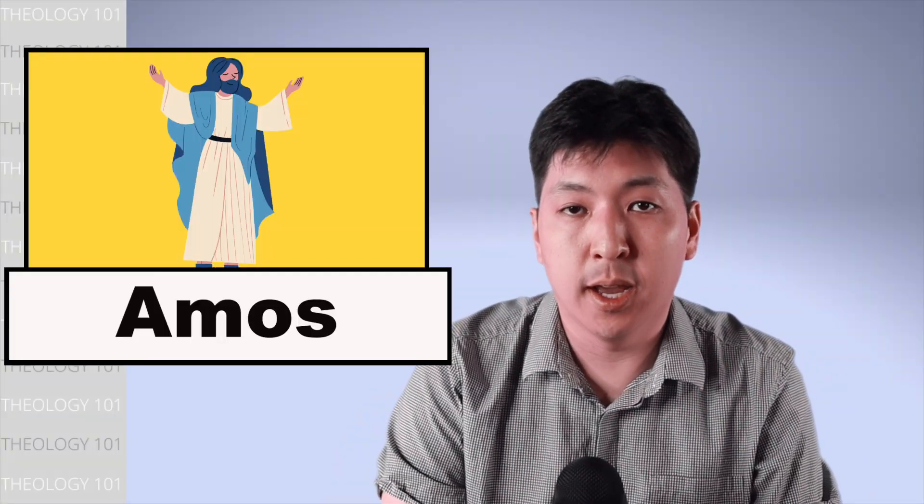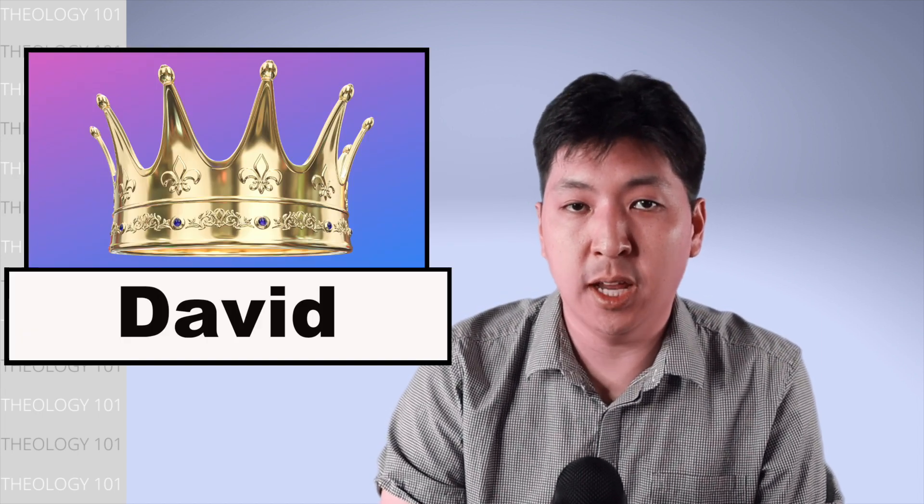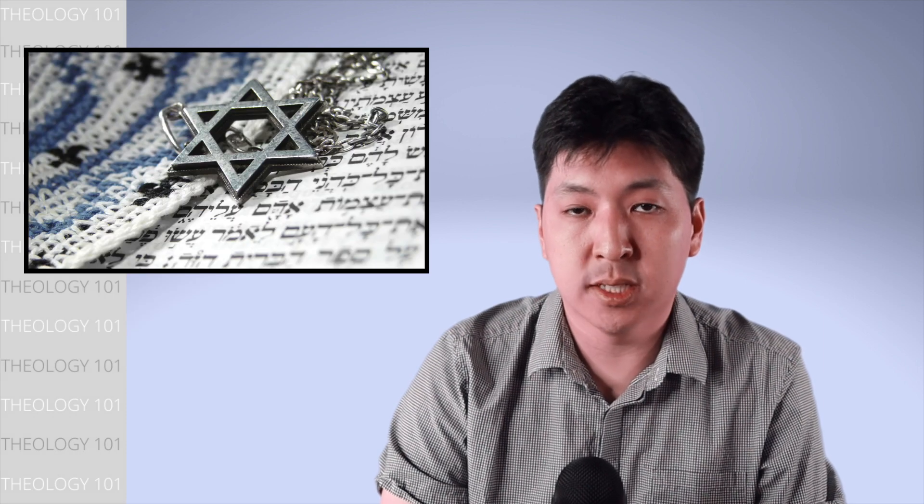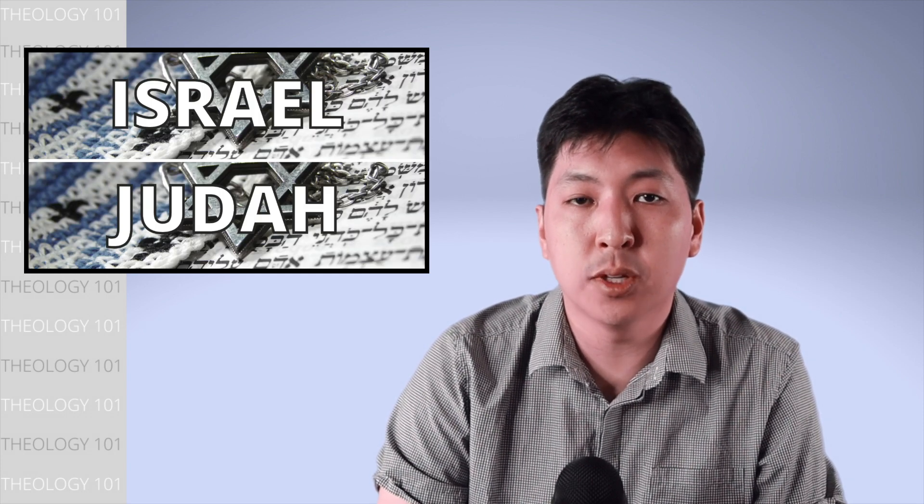Let me give you the historical background of Amos. During Amos' time, this was called the Silver Age in Israel's history. The Golden Age referred to the time of King David and Solomon, where Israel was established as one nation. After Solomon, Israel experienced a lot of wars, hardships, and trials. This led to Israel splitting into two kingdoms, Israel in the north and Judah in the south.